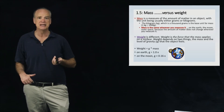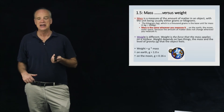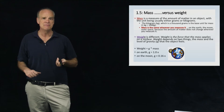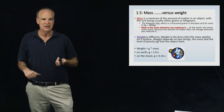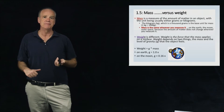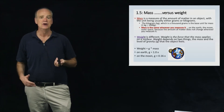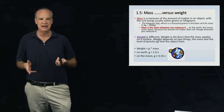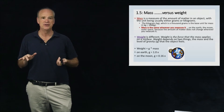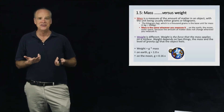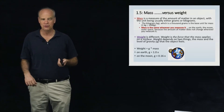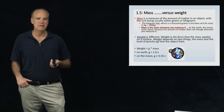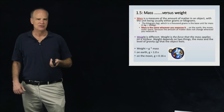For example, take a brick with a mass of one kilogram and weigh it on Earth. The weight depends on the mass — one kilogram — and on the gravitational constant g, which we set to 1.0 for Earth. So on Earth, the one-kilogram brick has a weight of 1.0 kilograms. Note that weight is measured with the same units as mass.